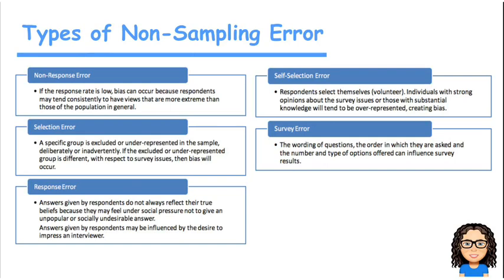This is just a reminder of some of the different types of non-sampling errors. So we've got our non-response, so that's looking at our response rate. And the idea is that the people that respond and don't respond could have different views.